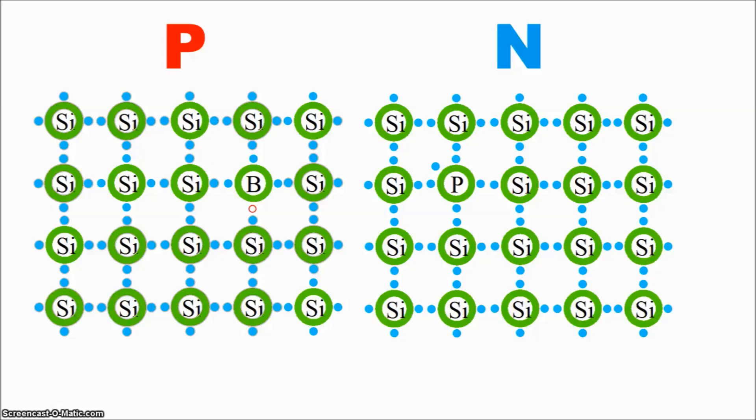In terms of the crystal, the phosphorus electron is free because it doesn't fit into the crystal structure, and the boron hole is free because it opens a space in the crystal structure. But in terms of the individual atoms, the crystal has a neutral charge. Boron has less electrons than silicon, but also less protons, and so overall the atom has a neutral charge. And phosphorus has more electrons than silicon, but also more protons, so it balances out too.